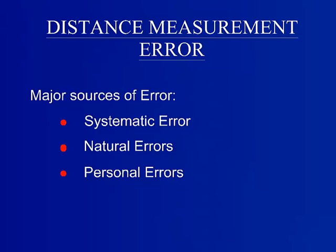Error can come from many places. These next few equations demonstrate the distance error that occurs when measuring with steel tape. There are three major sources of error: systematic, natural, and personal.